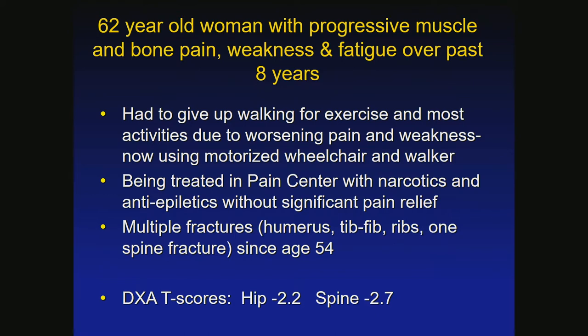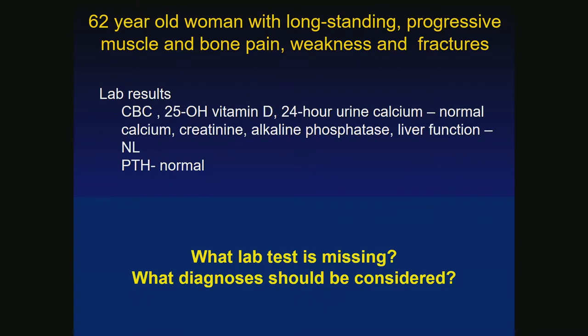This came on relatively suddenly and dramatically. Even though treated with narcotics, it's real — she's having actual fractures. Her DEXA score: hip minus 2.2, spine minus 2.7. Not that bad. We work her up for secondary causes of bone loss. Her CBC, 25-hydroxyvitamin D, 24-hour urinary calcium are all normal. Her calcium, creatinine, alkaline phosphatase, and liver function tests are normal. PTH is normal.